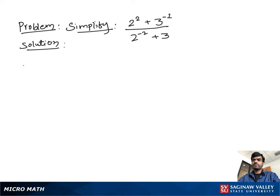Simplify 2 squared plus 3 to the negative 1, divided by 2 to the negative 2 plus 3 to the positive 1. We write 2 squared as 4, and to make the power of 3 positive we write 1 over 3.